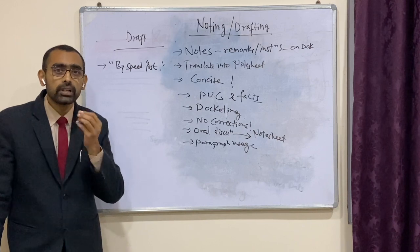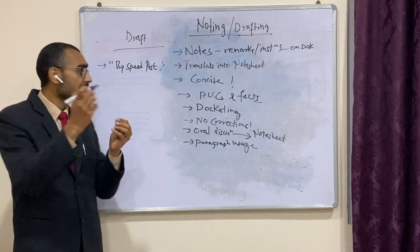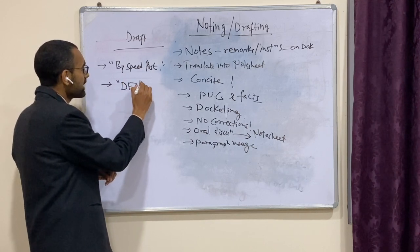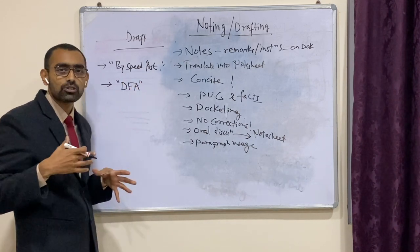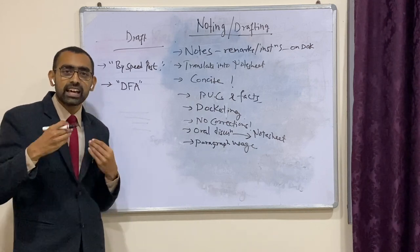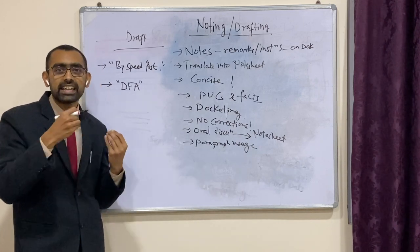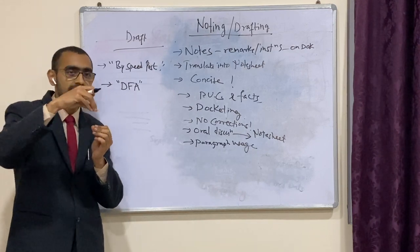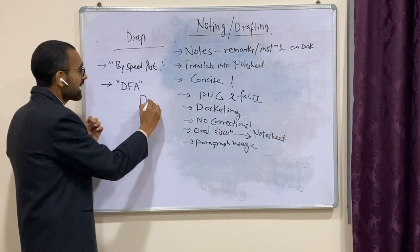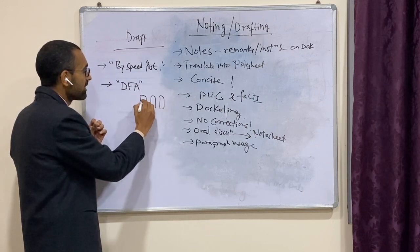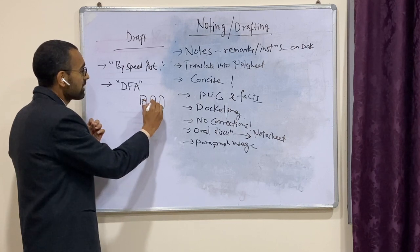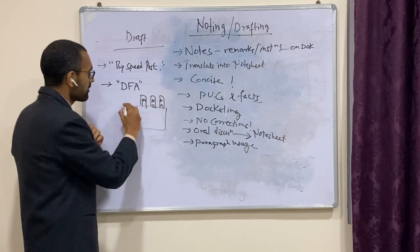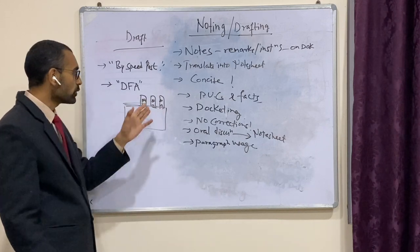When you are putting up a draft, you have to tag it with a paper slip and write DFA on it — DFA stands for Draft for Approval. If there are many drafts, they can be DFA 1, DFA 2, DFA 3. You have to position the tags in such a manner that they are visible separately — DFA 1, DFA 2, DFA 3 on different papers.